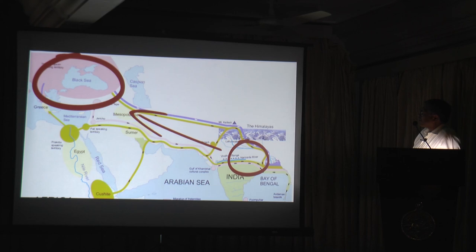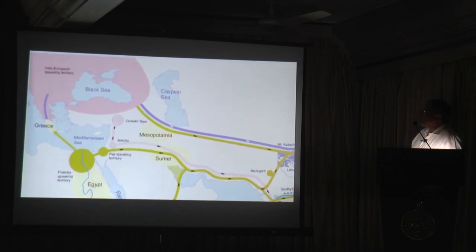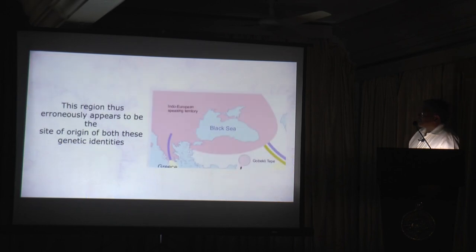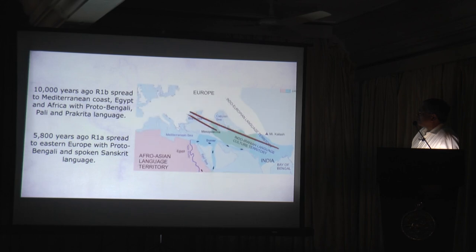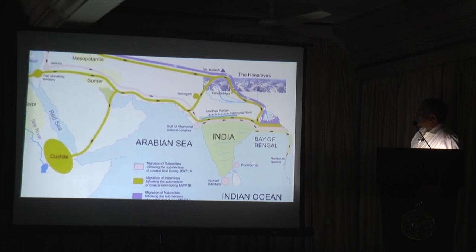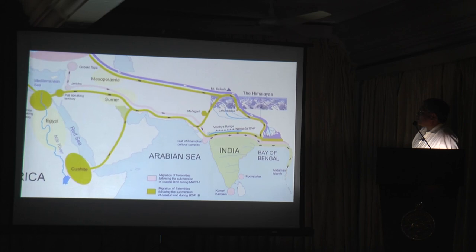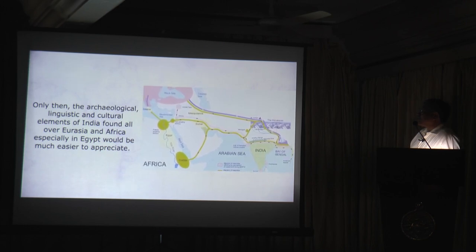Both R1-Alpha and R1-Bravo haplogroups from India entered Europe through the European Steppe and Anatolia — hence this region possesses the oldest divisions of both these genetic identities found within Europe, and thus erroneously appears to be their site of origin. 10,000 years ago, R1-Bravo spread to the Mediterranean coast, Egypt, and Africa with Pali and Prakritu languages. About 5,800 years ago, R1-Alpha spread to Eastern Europe with spoken Sanskrit language. It is important that we understand that both R1-Alpha and R1-Bravo haplogroups originated on the East Coast of India and spread along with their language and cultural characteristics. Only then will the archaeological, linguistic, and cultural elements of India found all over Eurasia and Africa — especially in Egypt — be easier to appreciate.